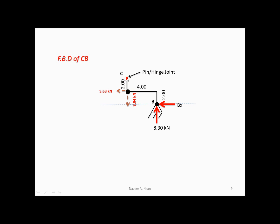That FBD looks like this — we've taken apart the structure and have all the forces. But remember, we have to replace that pin with two reactant forces — CX and CY. If I were to now take moments about this location, I will eliminate the maximum number of unknown forces and be left with one unknown force. Anytime I have an equation with one unknown, I can solve it.